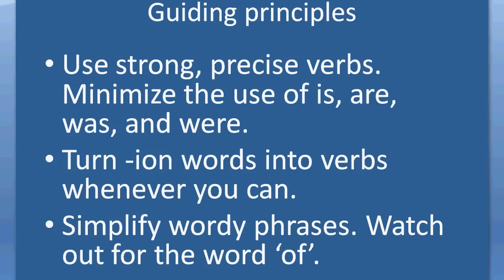Use strong, precise verbs. Minimize the use of is, was, and were. In many cases where you use is, was, and were — particularly combined with another verb — you're using too many words and creating extra work for yourself and for the reader. Turn -ion or -shun words into verbs whenever you can — we'll see some practical examples. And finally, simplify wordy phrases. A key one: look out for the word 'of'. If you're using the word 'of', ask yourself, do you really need to?